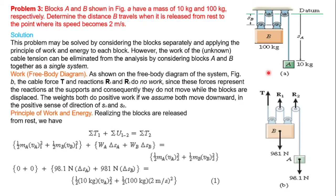The mass of block A is given, and the velocity of block B is 2 meters per second. The velocity of block A is unknown, and the work done and displacement are also unknown. Block B reaches 2 meters per second.